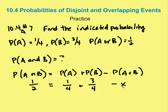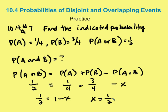Now all we have to do is find P(A and B). We have 1/2 = 1/4 + 3/4 − X, so 1/2 = 1 − X. Solving for X, we add X to both sides and subtract 1/2 from both sides, giving X = 1/2. So the probability of A and B is 1/2.